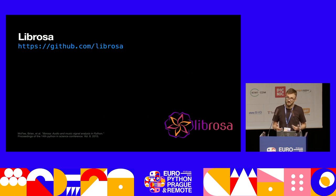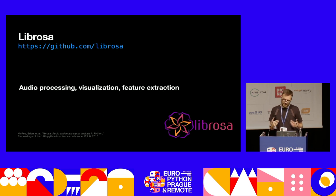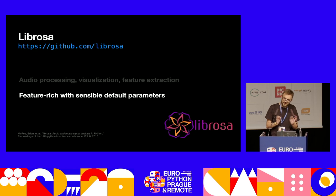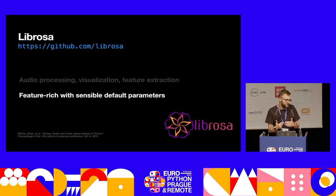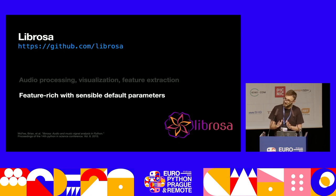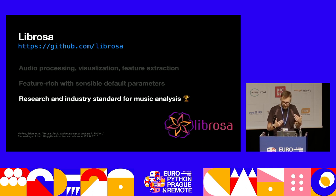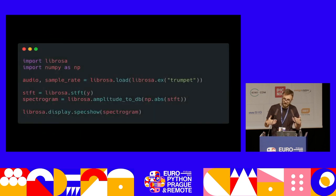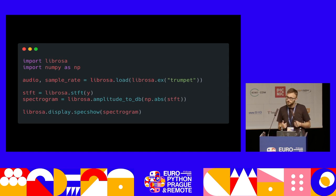Another library is Librosa, which is an audio processing, visualization, and feature extraction library. It's very feature rich, and it has really sensible default parameters for many of the operations. So you can actually learn about digital signal processing while you're getting familiar with the API. The API is functional — think more in terms of NumPy rather than scikit-learn. And Librosa, over the years, has become kind of the research and industry standard for music analysis. So if you want to create perhaps a spectrogram, which is a standard way of visualizing audio, this is how we can do it using Librosa.